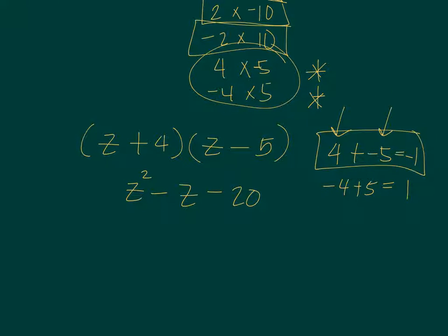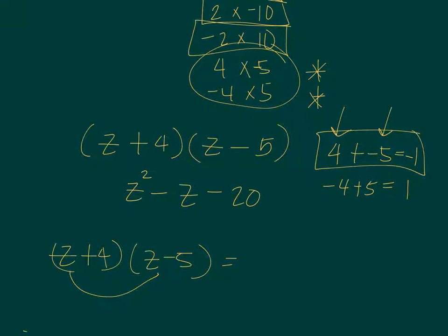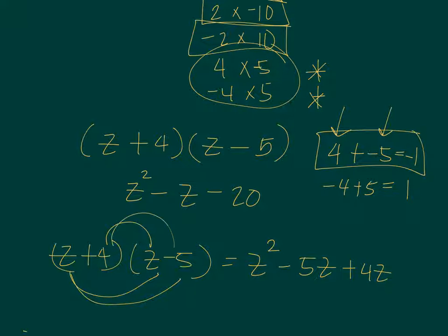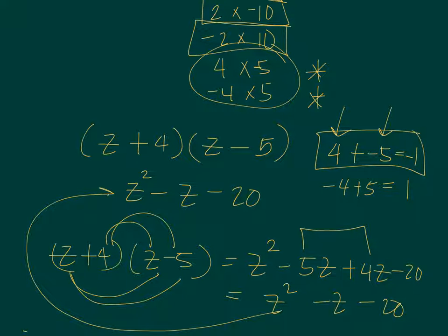To check, we have Z plus 4 and Z minus 5. Expanding: Z times Z is Z squared; Z times negative 5 is negative 5Z; 4 times Z is 4Z; and 4 times negative 5 is negative 20. So negative 5Z plus 4Z gives negative Z. Therefore Z squared minus Z minus 20 equals the given expression, confirming that Z plus 4 times Z minus 5 is the correct factored form.